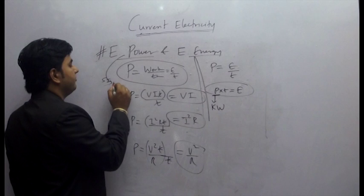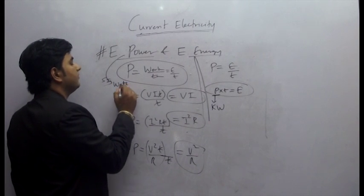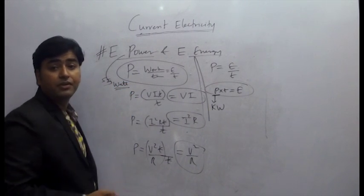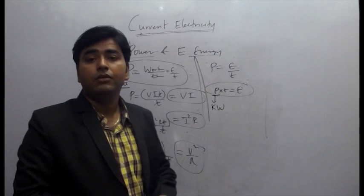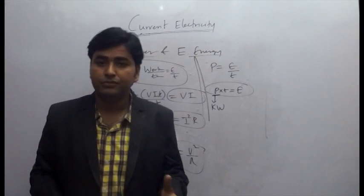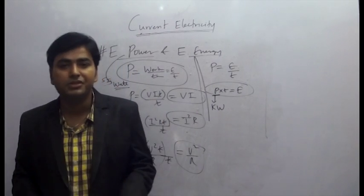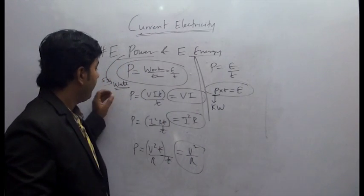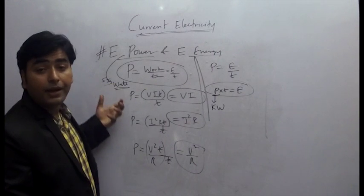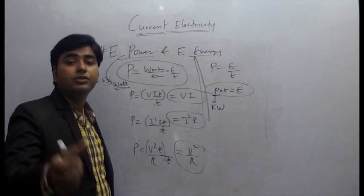SI unit is watt. Its commercial unit is horsepower. One horsepower is 746 watts. Horsepower gadi ke liye ya industrial machines ke liye use kiya jaata hai. And kilowatt - kilo is thousand, so one kilowatt is thousand watts.